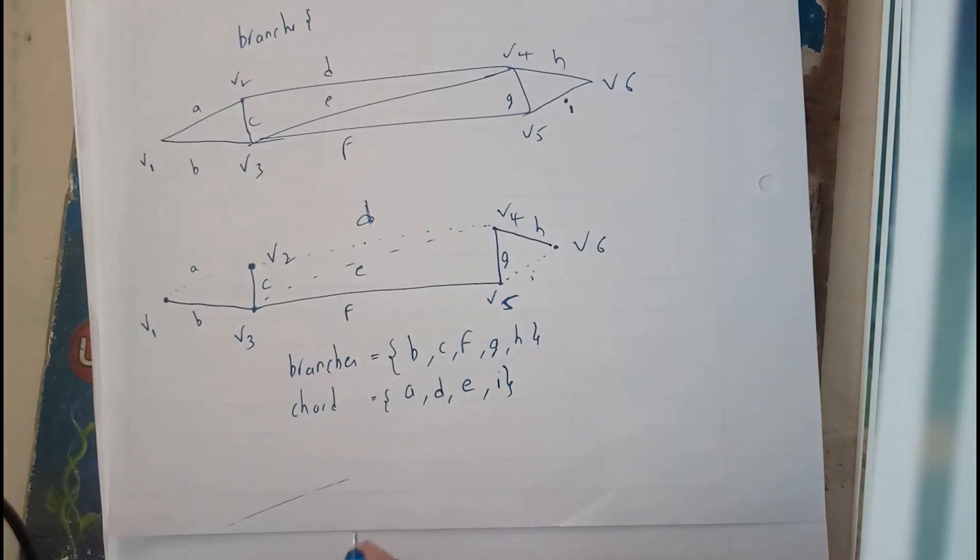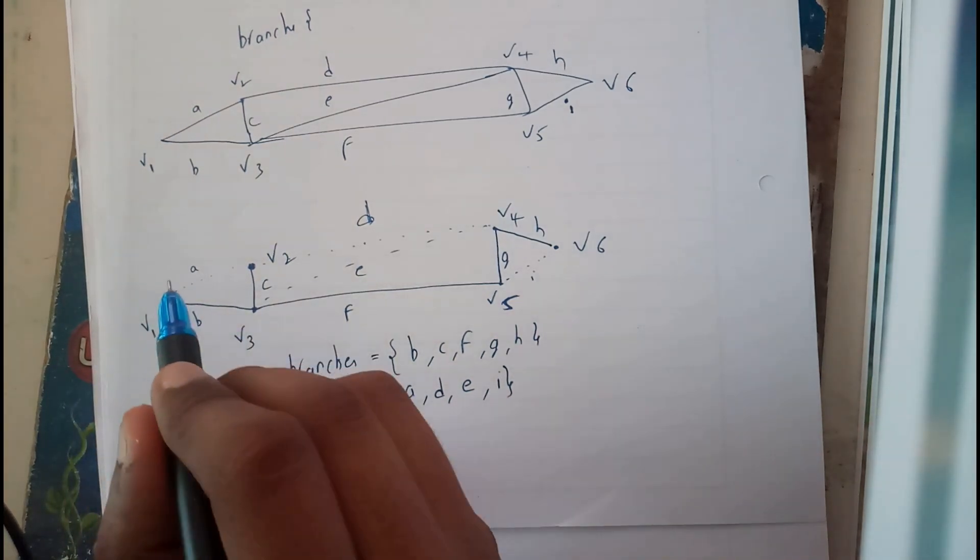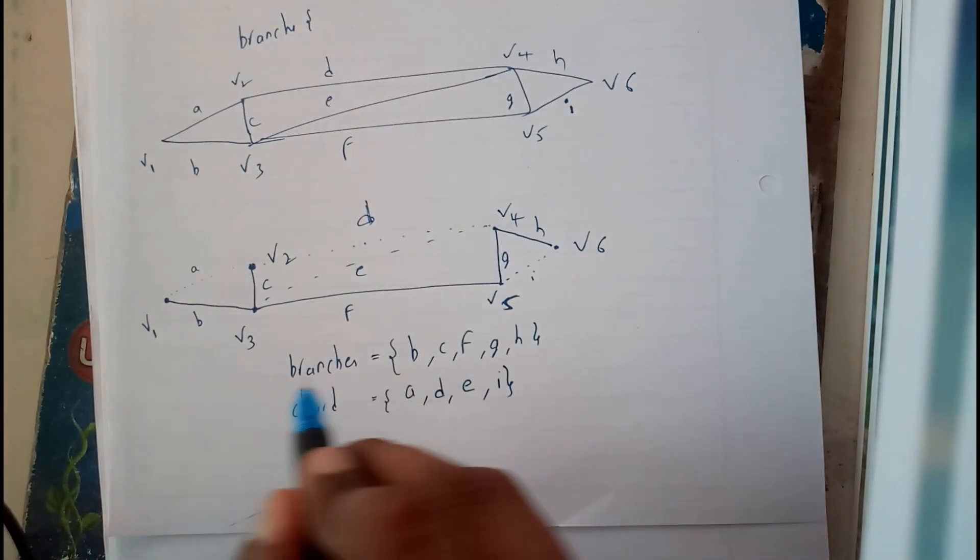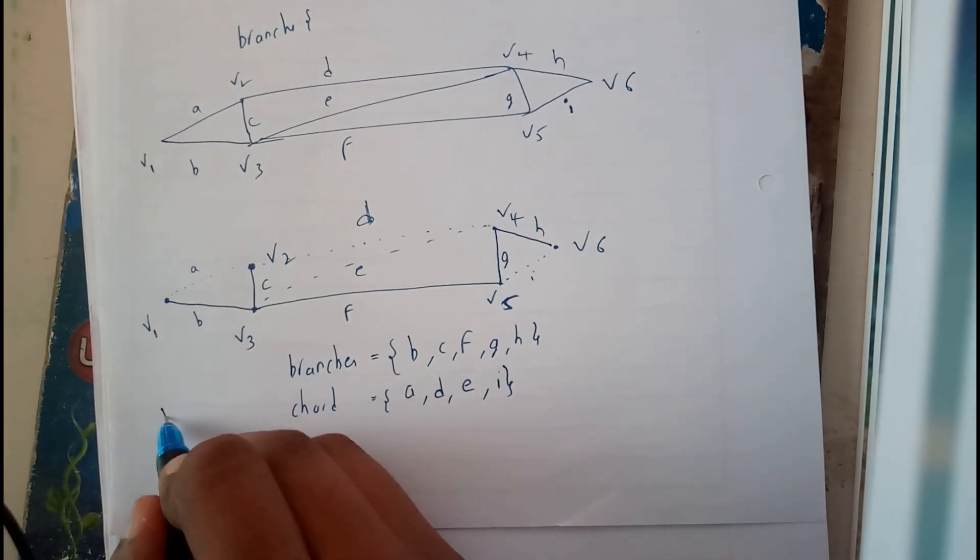Now whenever we are trying to find the cut set, I think everyone is clear with the initial definition in which I told you clearly that there should be exactly a single branch.